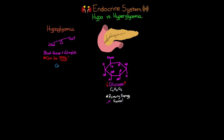Let's talk about the causes of hypoglycemia, which we can divide into three subcategories: endogenous, exogenous, and functional. Endogenous causes include tumors or metabolic errors, resulting in either an overuse of glucose or an overproduction of insulin — both leading to a state of too little glucose.